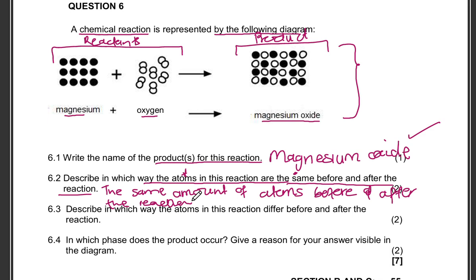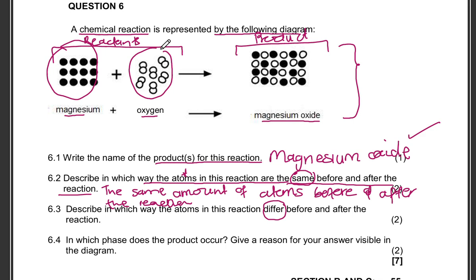Question 6.3: describe in which way the atoms in this reaction differ. The previous question asked how they are the same; this question asks how they differ before and after the reaction. Before the reaction, all the magnesium atoms were bonded with each other, and the oxygen atoms were bonded with each other. After the reaction, the magnesium atoms have bonded with the oxygen atoms — that's how they differ.